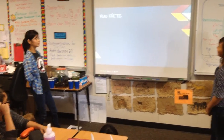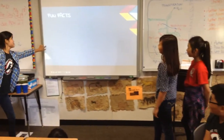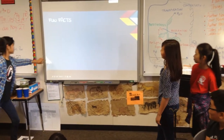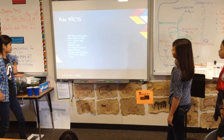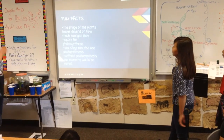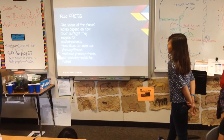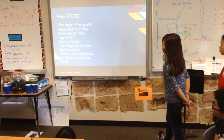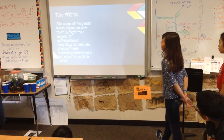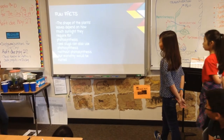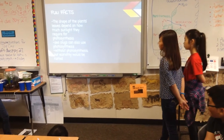Some fun facts: the shape of a plant's leaves depends on how much light they require for photosynthesis. Sea slugs can also use photosynthesis.